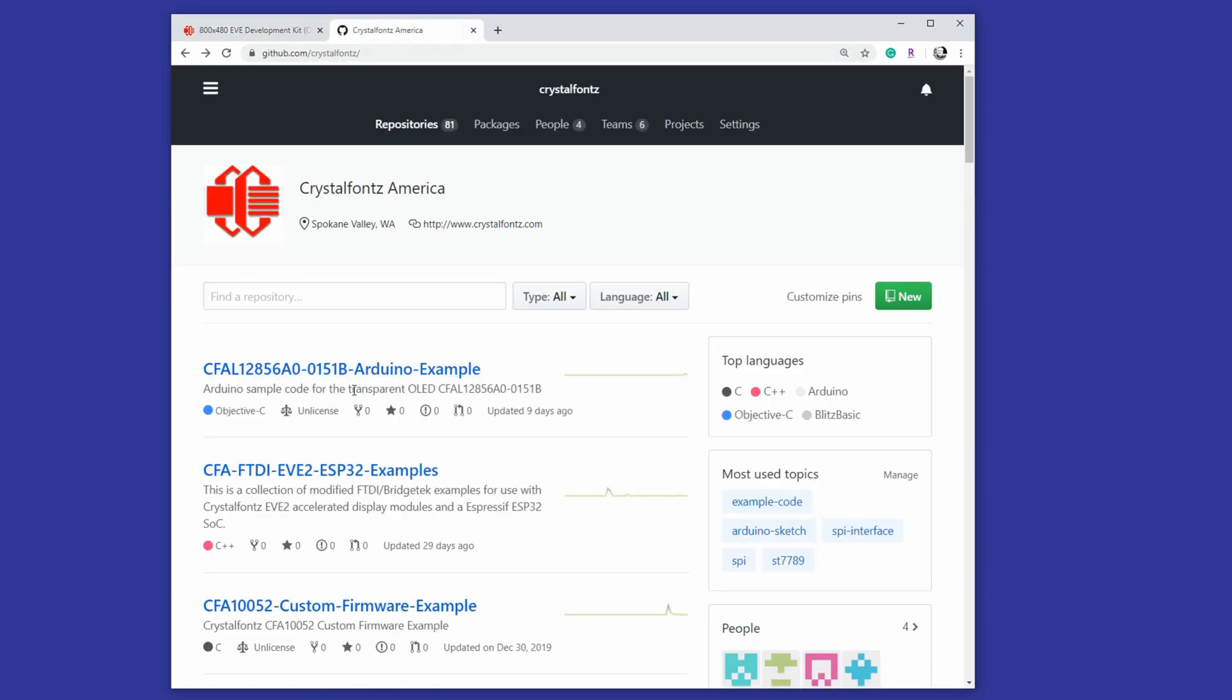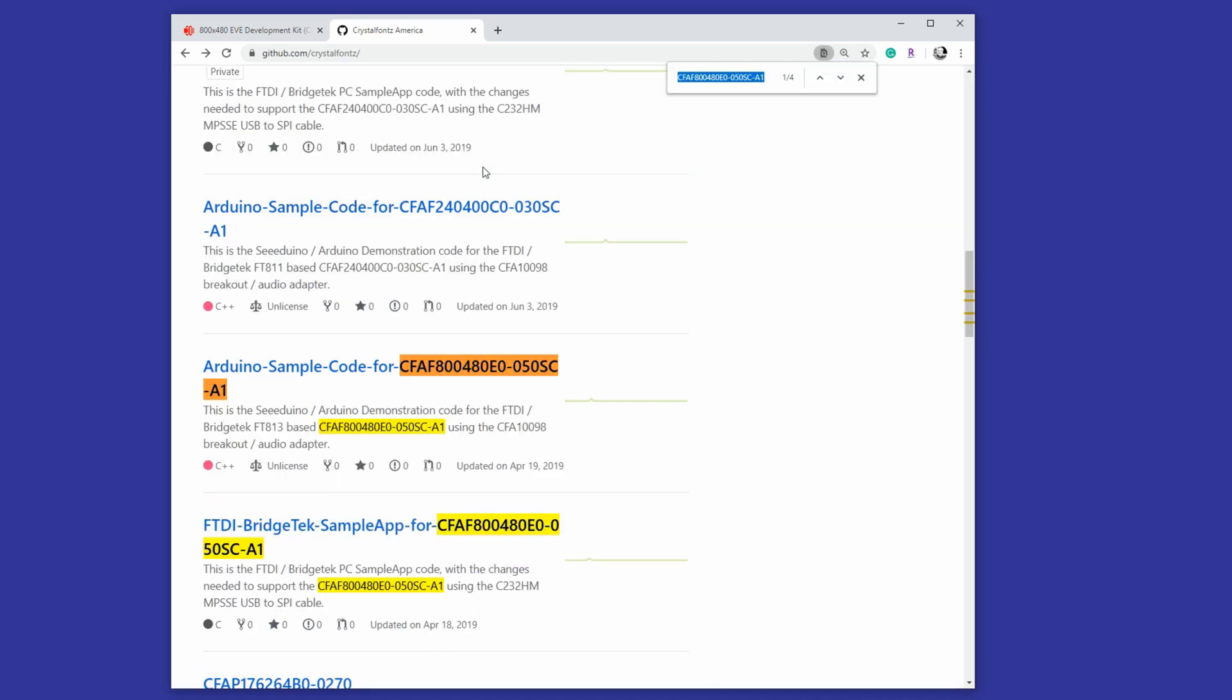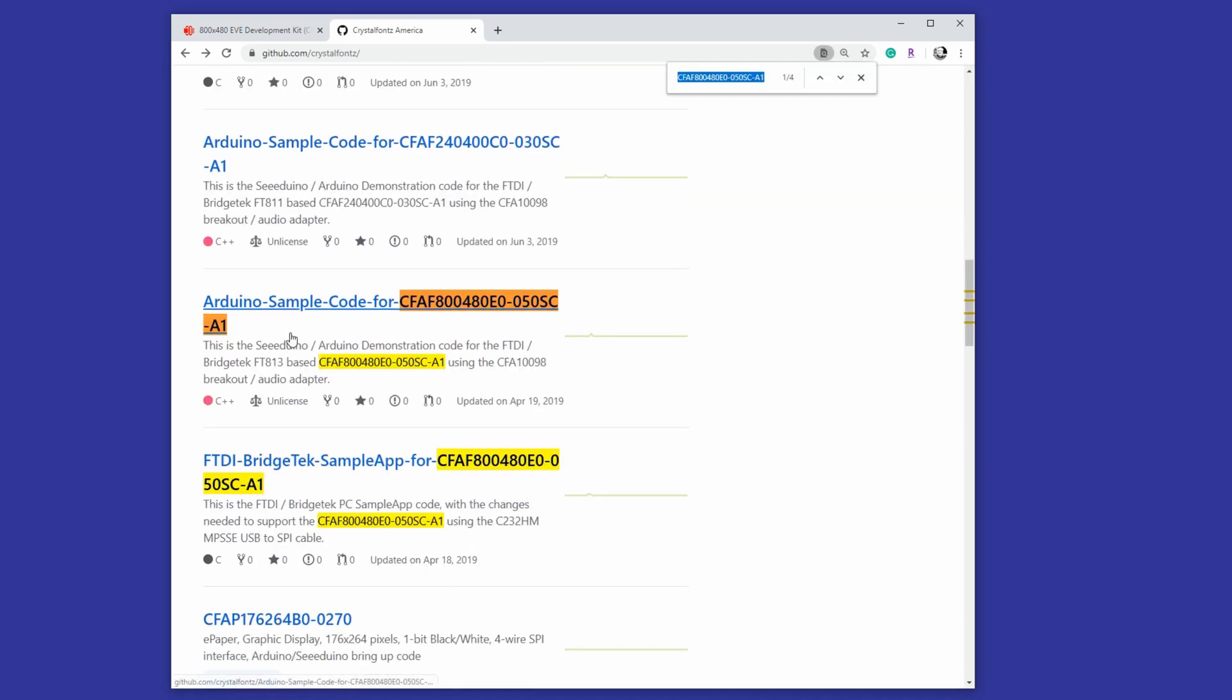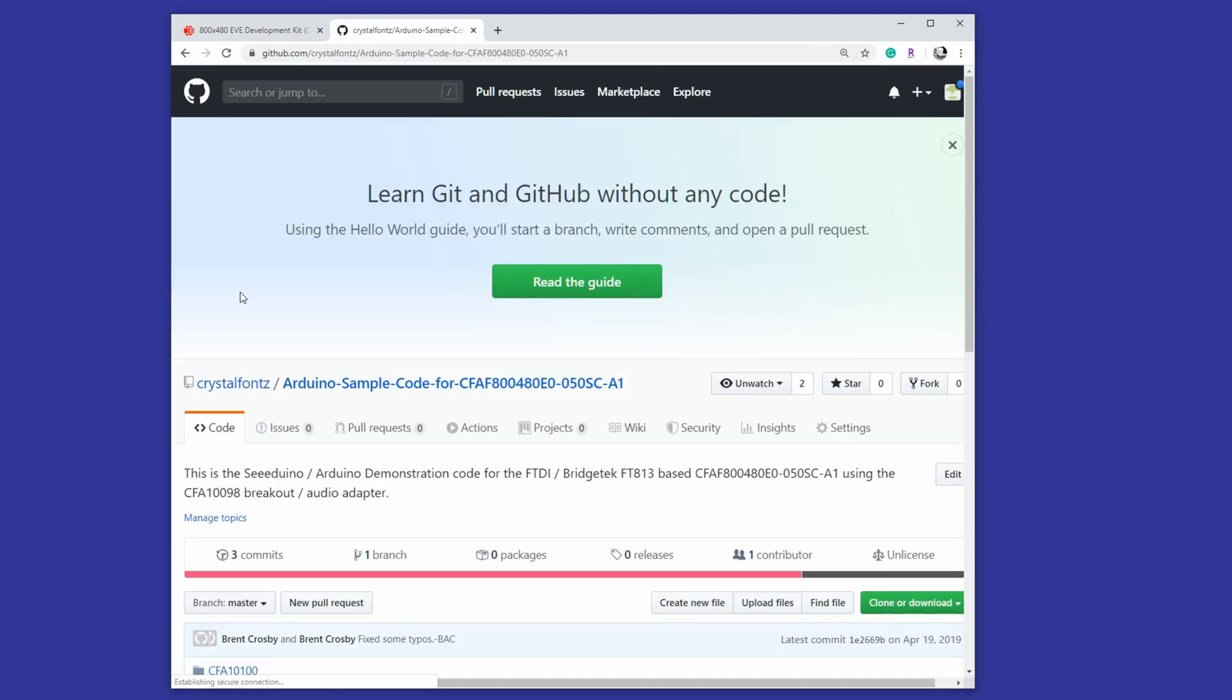So if you search for the part number on this page, you'll see the code that's applicable to that part number, and this is the top one. Here's the one we're after, this Arduino sample code.